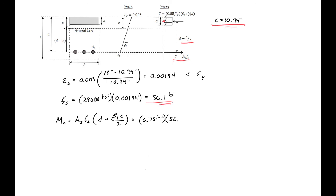The stress in our steel, which we just found, 56.1 ksi, and then times our d, 18 inches, minus beta_1 for 4 ksi is 0.85, and then C, 10.94, divided by 2. And we'll find our nominal moment to be equal to 5,065 kip-inches.